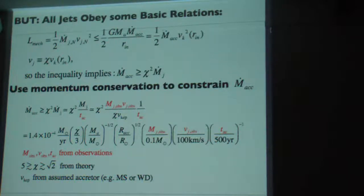No matter what's driving the thing, all jets obey some basic relation and this is very important. The mechanical luminosity of the jet is less than the accretion luminosity. So the amount of energy that you accrete per unit time, multiplied by the Keplerian speed at the inner orbit, is roughly the amount of energy that you have available to do work or radiate. So the mechanical luminosity is less than that. And all jet models basically predict that the outflow speed is some number of order unity times the Keplerian speed at the innermost radius.